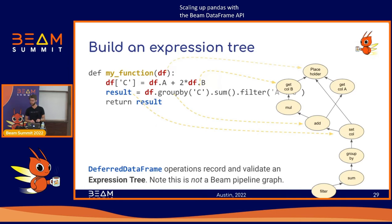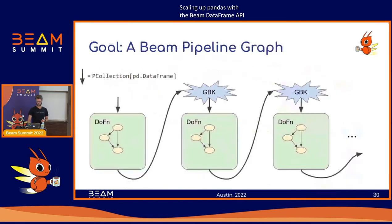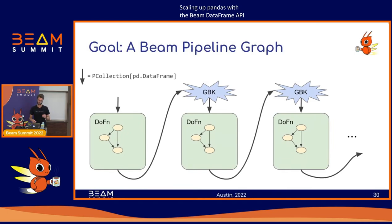This expression tree is not a Beam pipeline graph yet — it's a separate graph structure within the DataFrame API that we then have to optimize and turn into a Beam pipeline graph. Our goal is to take pieces of that expression tree and turn individual pieces into do_fns executed as ParDos, with group_by_keys inserted between them. The problem we need to solve is: where do we need to insert a group_by_key? For example, if you have a join or a group aggregation in your Pandas logic, you need a group_by_key to co-locate the data.